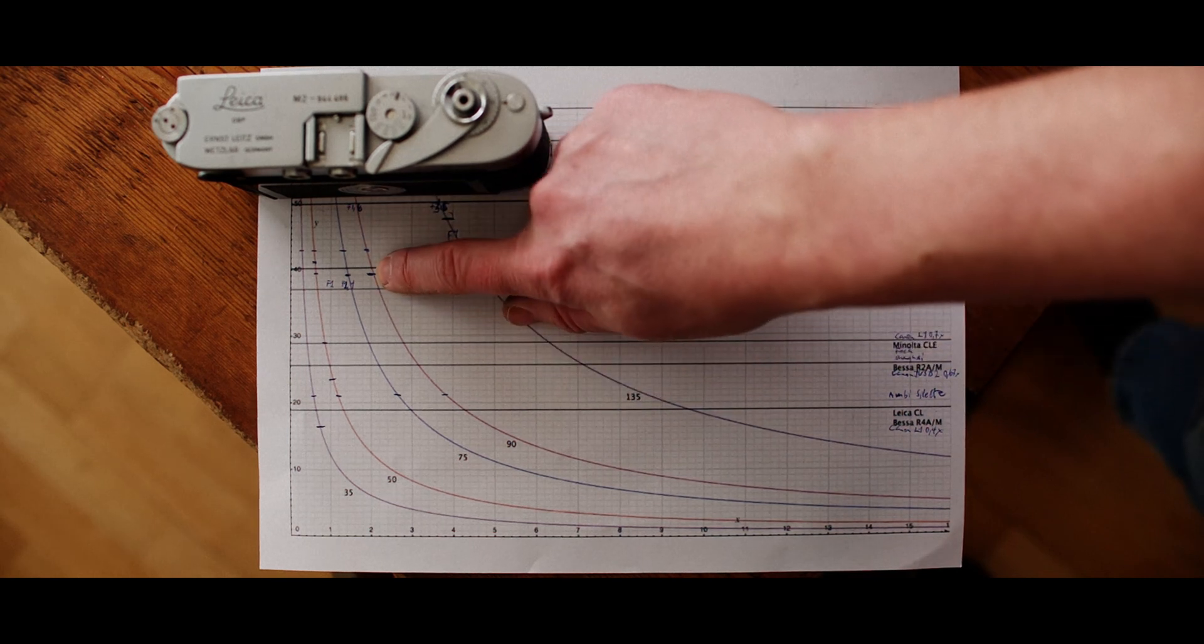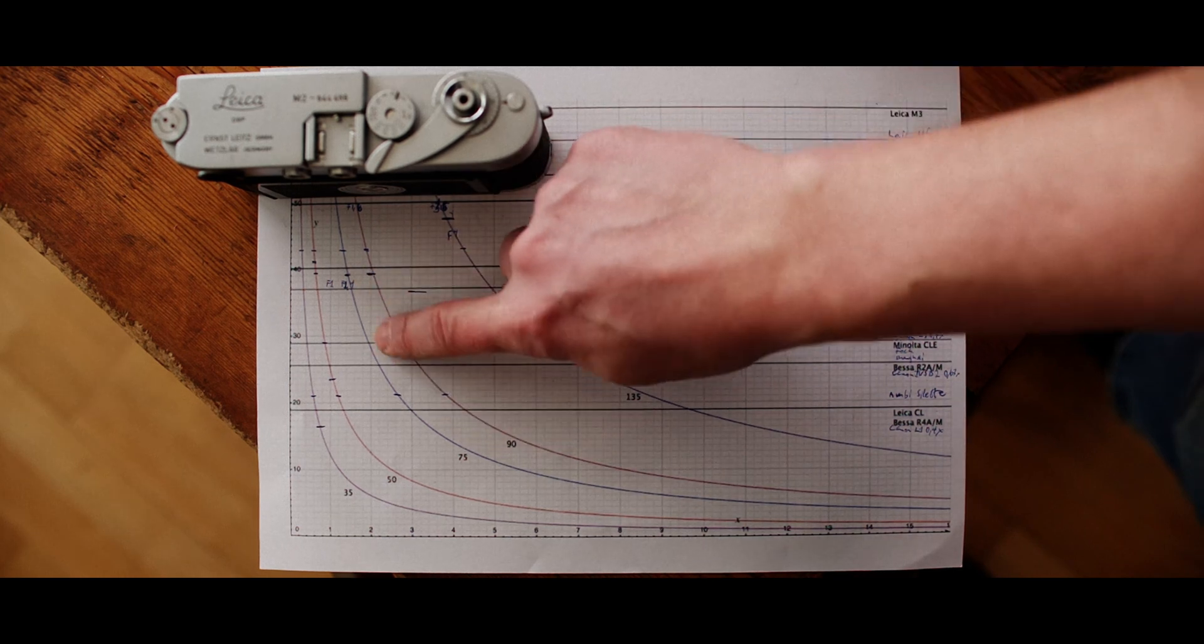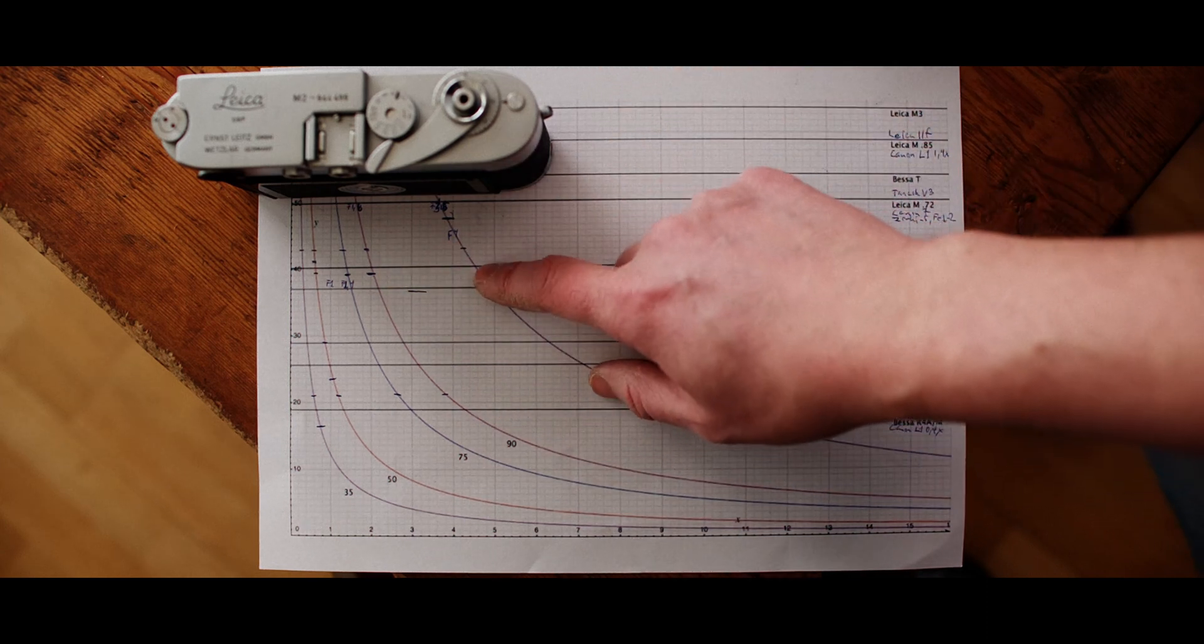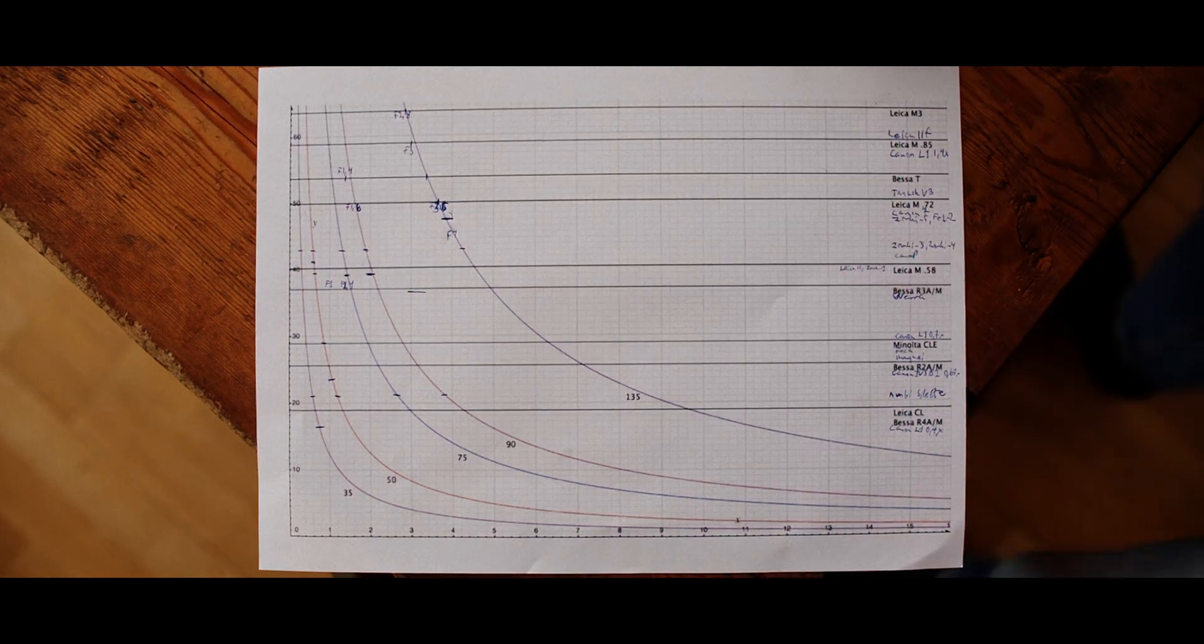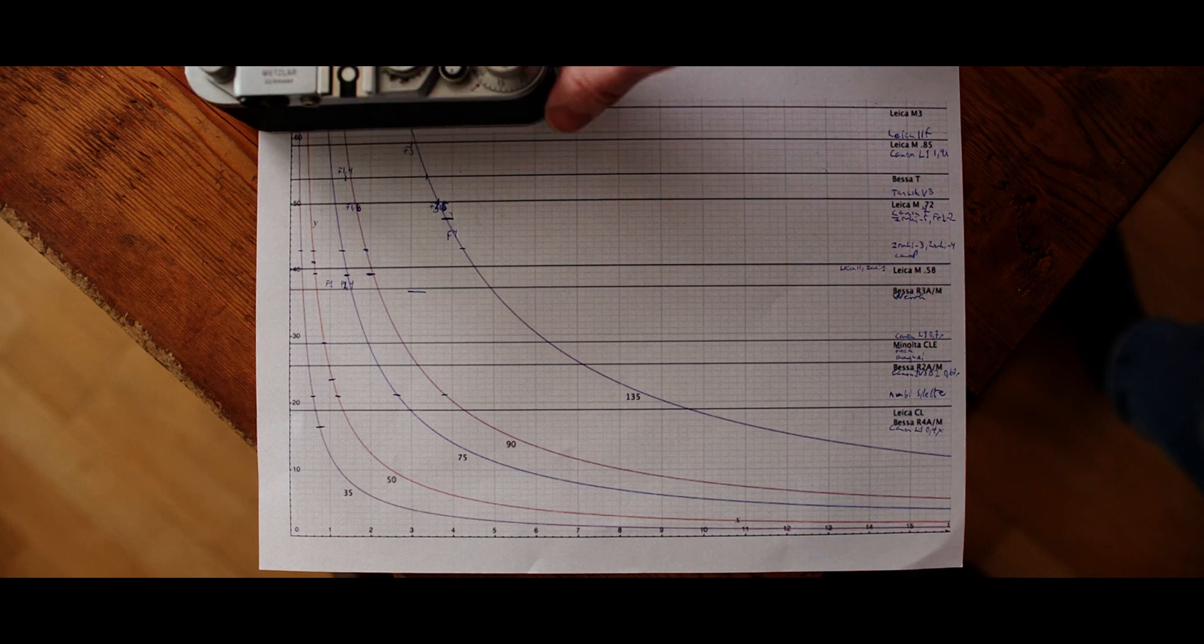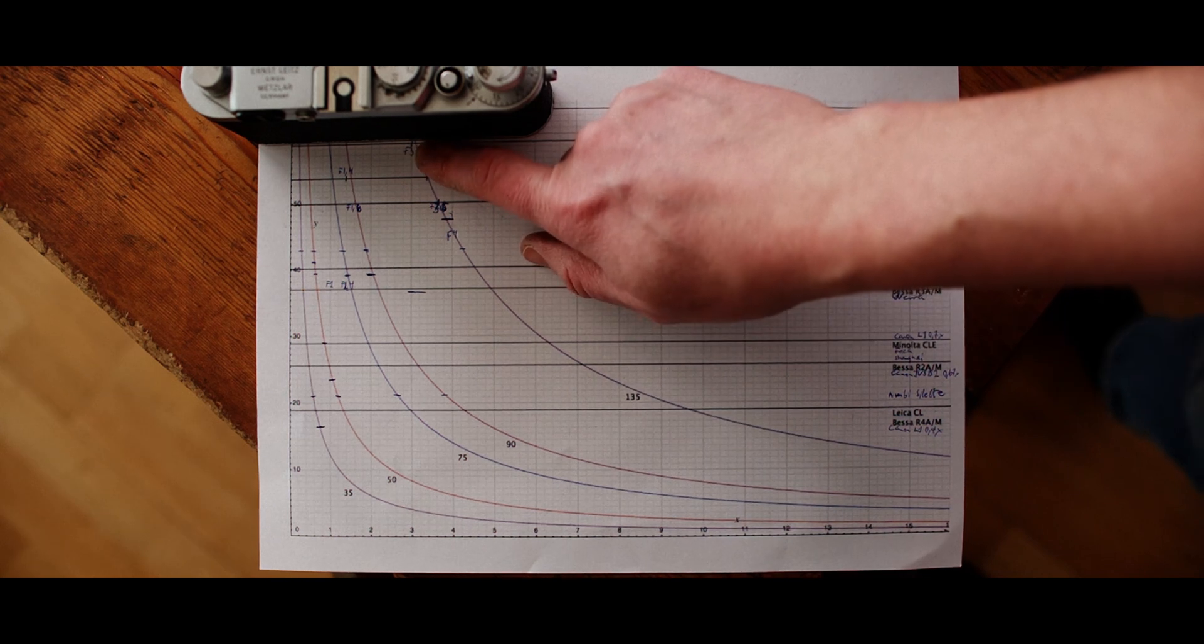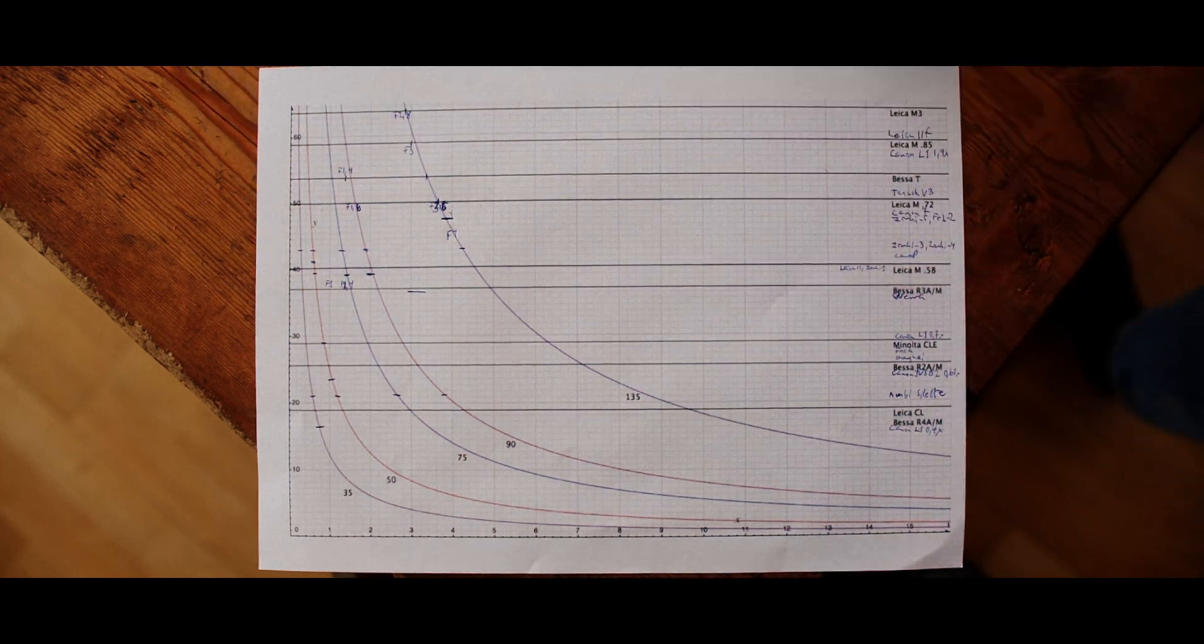So it would do 85mm f/1.4 probably. The other ones no problem. But as you see the standard Leica with 39 millimeter base, it would struggle with the 75 millimeter f/1.4 and also the Austrian 90s 135. Not really a good option with the original ones. And then we have the M2 and M6 with 0.85 millimeter magnification.